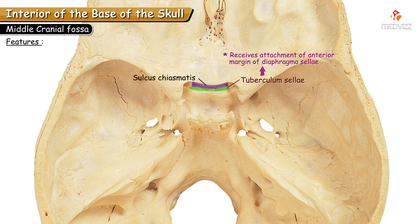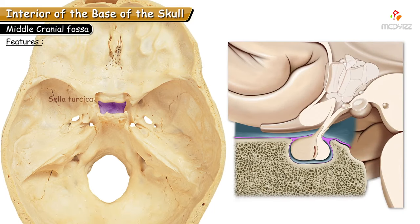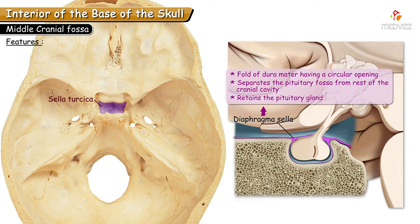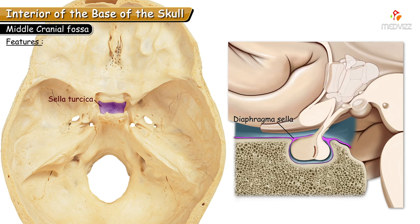In anatomy, diaphragm means a partition. The diaphragma sellae is a fold of dura mater that acts as a partition separating the pituitary fossa underneath it from the rest of the cranial cavity. It is a flat fold of dura mater with a circular opening through which the stalk of the pituitary gland passes. This structure roofs and retains the pituitary gland within the pituitary fossa, also called the hypophysial fossa.